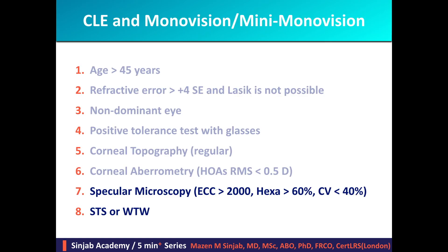Finally, specular microscopy and sulcus-to-sulcus and white-to-white measurements should be considered in the same way as for phakic IOL implantation, as discussed in episode 9. One may ask why we study sulcus-to-sulcus or white-to-white when we are not implanting a phakic IOL. The answer is simple: clear lens extraction is usually performed for extreme refractive errors, which in most cases are of axial origin. This means the structure and dimensions of the anterior segment are not within the average normal distribution. Sulcus-to-sulcus is larger than usual in axial myopic eyes and smaller in axial hyperopic eyes, which may require ordering a special haptic diameter.